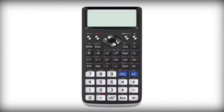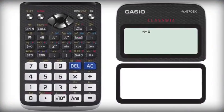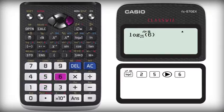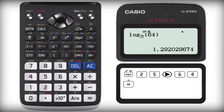Using ClassWiz to check your answer, press the logarithm button with variable base number and value. Input base number of 25 and value of 64 and press equal. You should get a simplified value of 1.292029674.